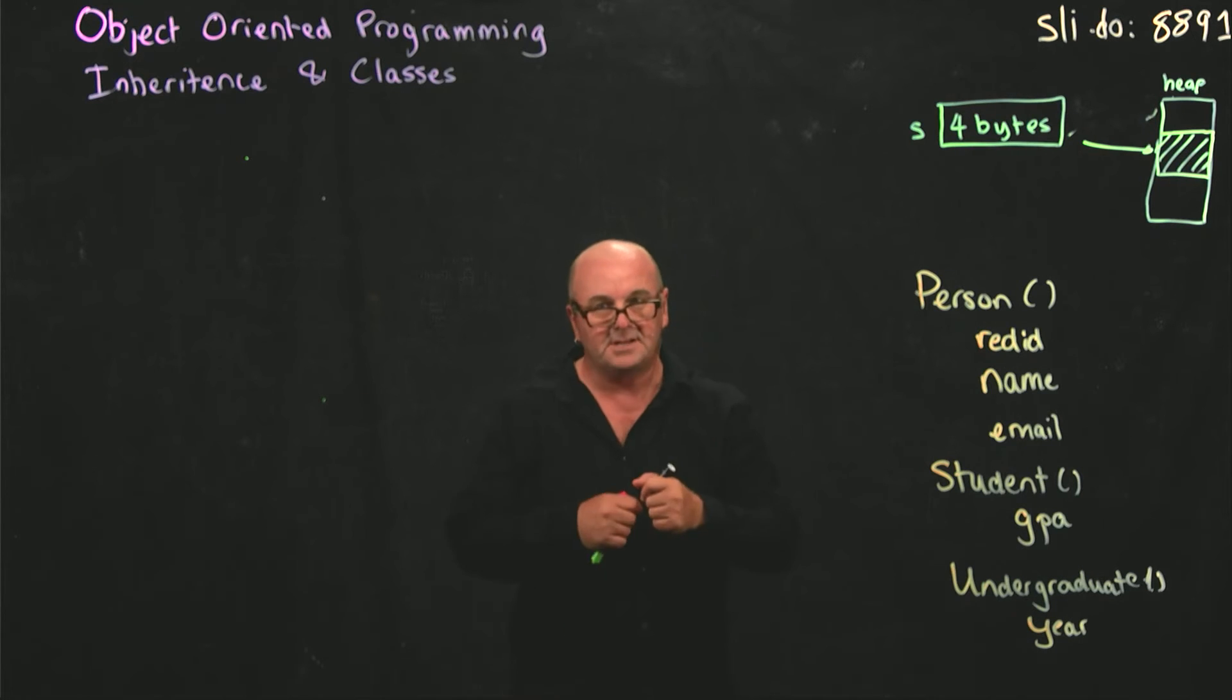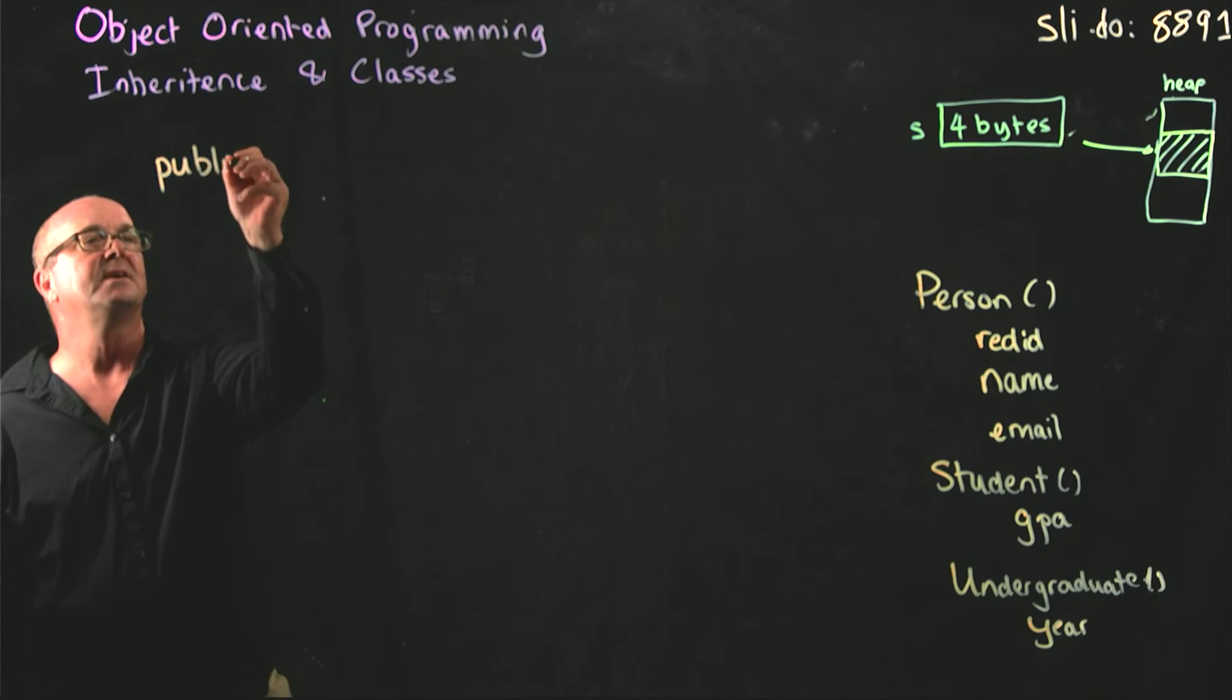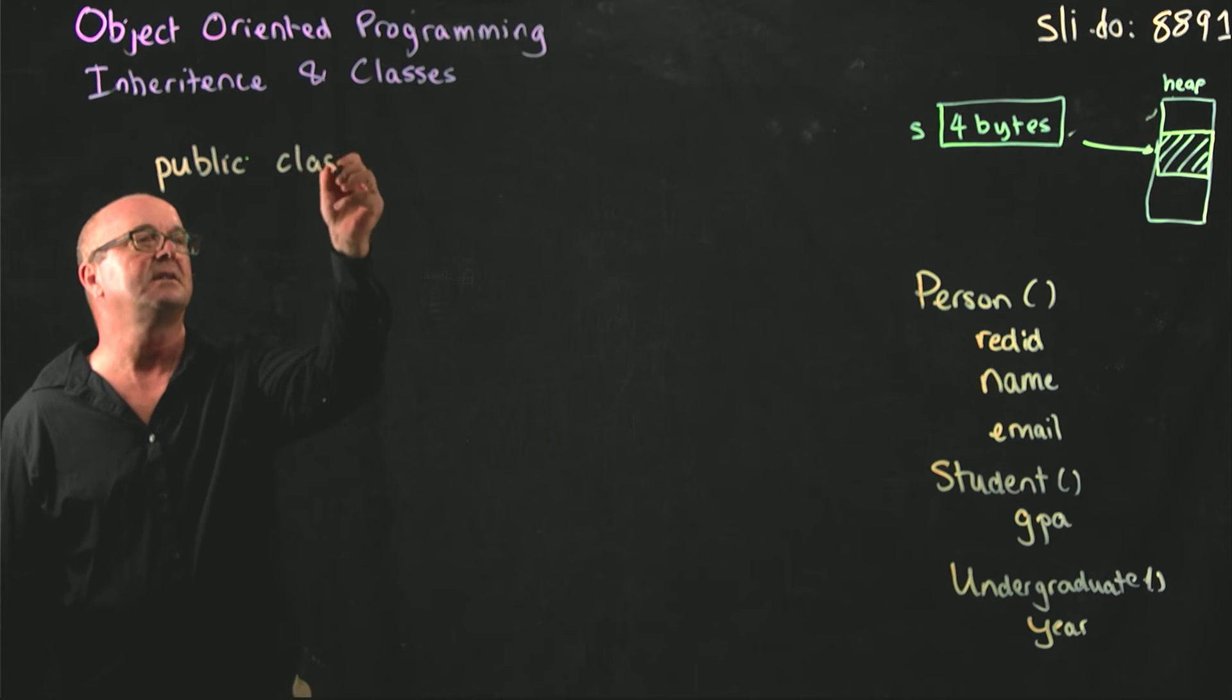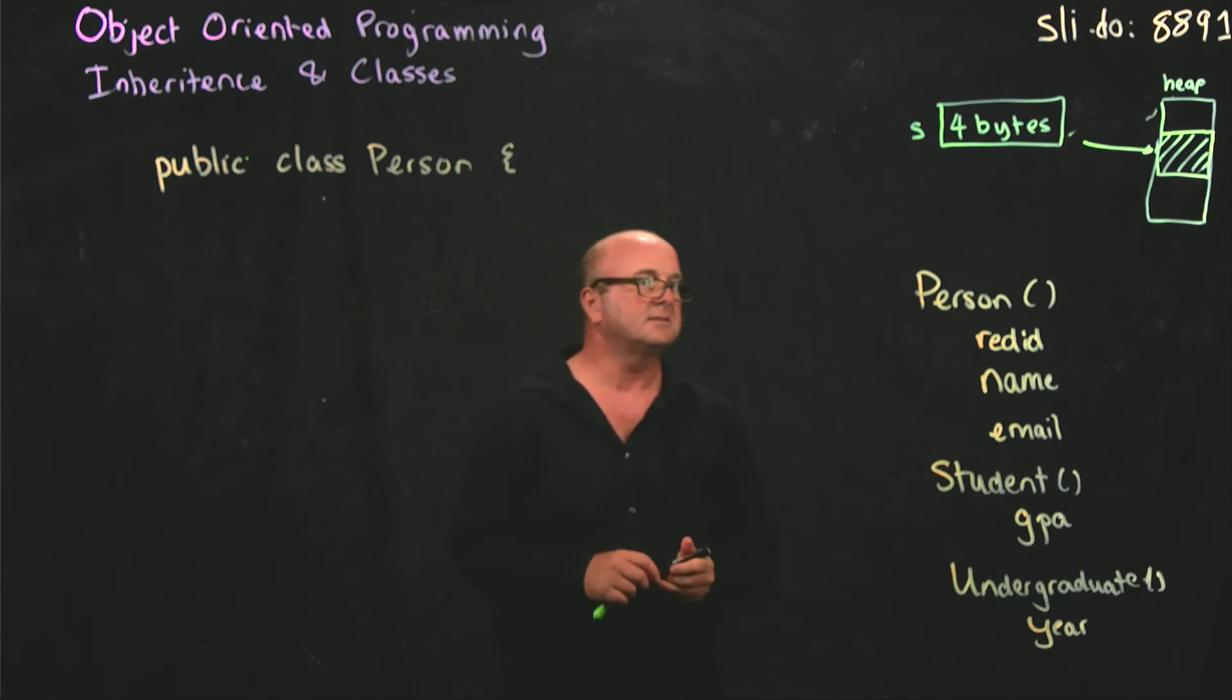The way that we do this is using extends. And so in our class definitions, we would say public class Person. And this is our top level class.